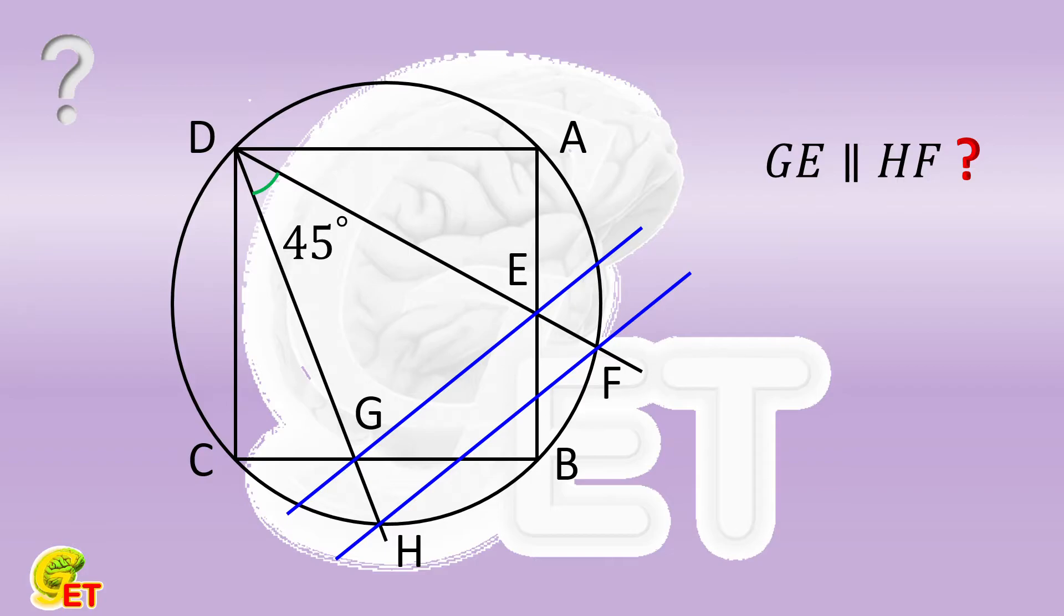We first have to take good use of this 45 degrees angle. So we connect DB. Now we can see the angle BDC is also 45 degrees. So angle CDH is equal to angle BDF.